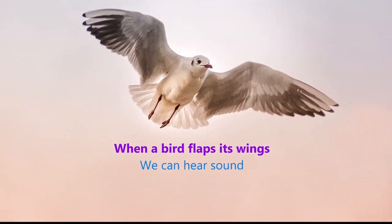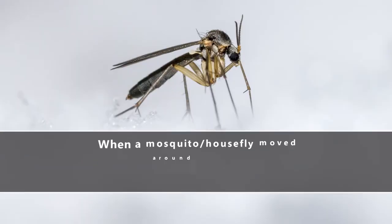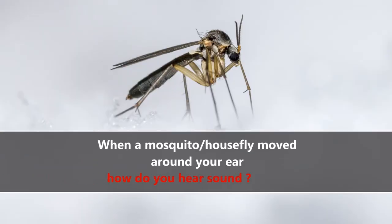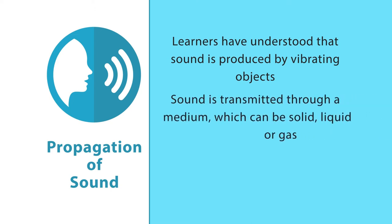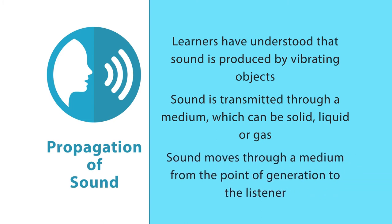When a bird flaps its wings, we can hear sound. When a mosquito or housefly moves around your ear, you hear sound due to vibrations in the air. So sound propagates from one place to another, produced by vibrating objects. That sound is transmitted through a medium — which can be solid, liquid, or gas — and moves from the point where sound is generated to where the listener is. For example, when you are listening to this video on your mobile or laptop, the sound is generated by that device but reaches your ear through air.